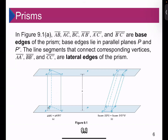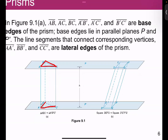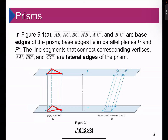In figure 9.1a, segments AB, AC, and BC, as well as A'B', A'C', and B'C' are the base edges of the prism. The base edges lie in parallel planes P and P'.